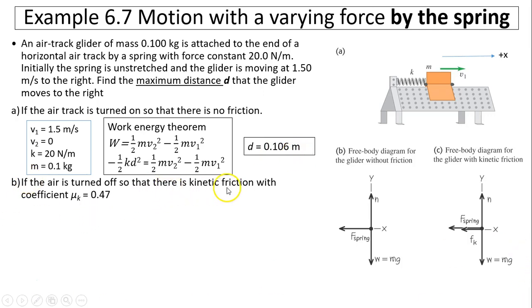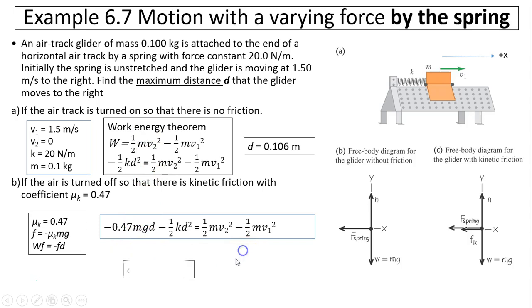Now if the air is turned off, you'll have kinetic friction. Now you'll have two forces acting on the glider and both are doing negative work. Your mu k equals 0.47 and your friction force is negative. Work done by friction is negative f times d because friction and displacement are 180 degrees and cosine 180 is negative one. You plug everything in, you should have d equals 0.086 meters. As you can see, obviously this makes sense because when you have friction, you will move a shorter distance than when you don't have friction.